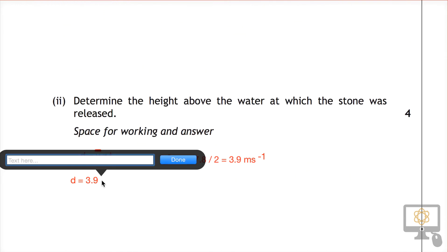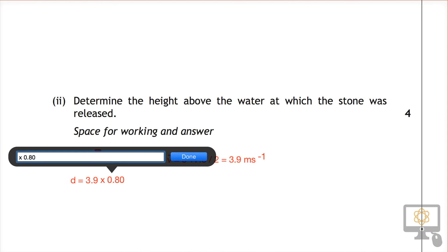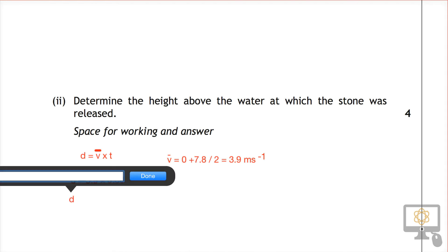If we just put in the time times 0.80, put it in the right place, we can find that our distance traveled, the height, was 3.1 meters.